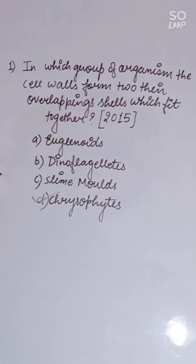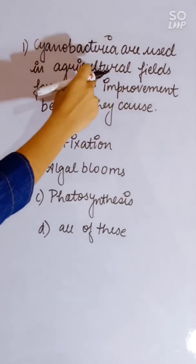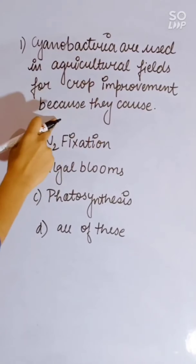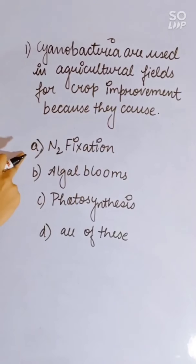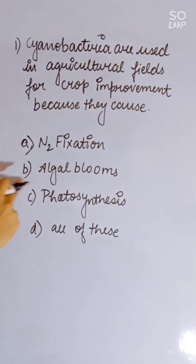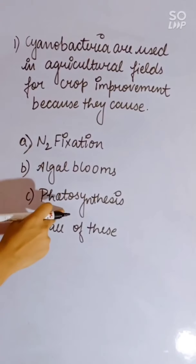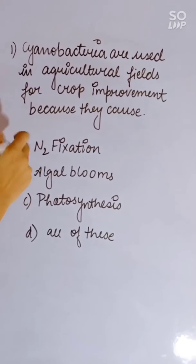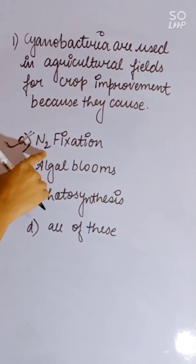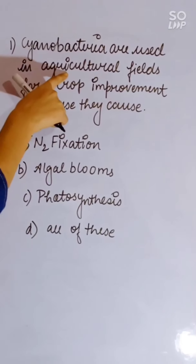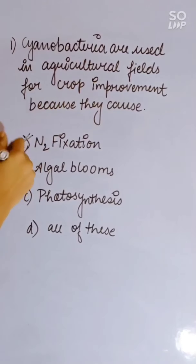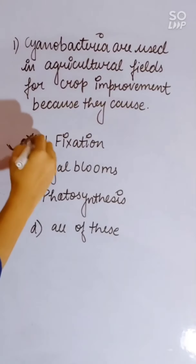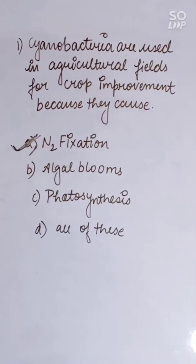NEET 2015 question: Cyanobacteria are used in agricultural feed for crop improvement because they cause: N2 fixation, algal bloom, photosynthesis, or all of these. For nitrogen fixation, cyanobacteria are used in agriculture. Correct answer is N2 fixation.